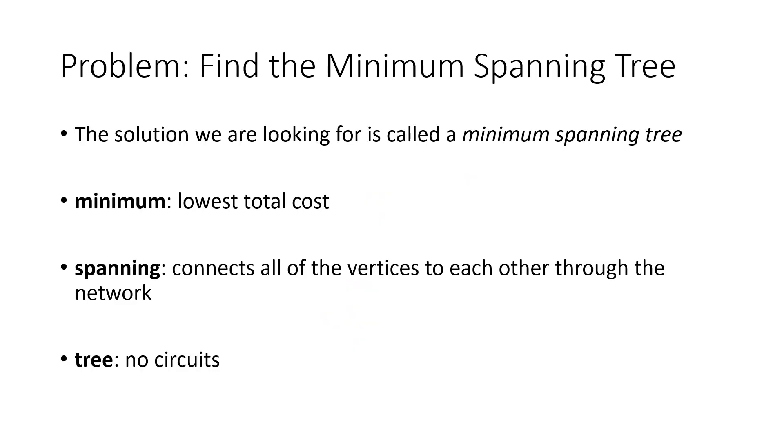This is the problem. What we're looking for is called the minimum spanning tree. Let me break those three words down for you. Minimum hopefully makes sense—it's the lowest total cost. Spanning is this idea of being able to get from any vertex to any other vertex, so it's spanning when everything's all connected to the network. And then tree is a technical term that just means no circuits. Again, what we hopefully noticed is that if we ever had a circuit, then that's at least one edge too many.